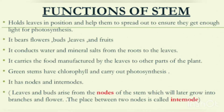It conducts water and mineral salts from the roots to the leaves. It carries the food manufactured by the leaves to other parts of the plant. Green stems have chlorophyll and carry out photosynthesis. It has nodes and internodes. Leaves and buds arise from the nodes of the stem, which will later grow into branches and flowers.